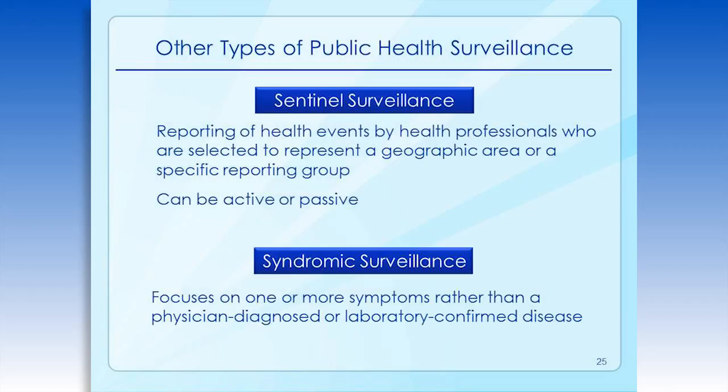There is a gradient here, and an even more active system might involve assigning staff to periodically visit reporting sources and review emergency room, laboratory, or other records for possible cases. Another type of surveillance is sentinel surveillance. A few reporting sources are selected to serve as sentinels. These may be clinicians' offices, laboratories, or other components of the healthcare system.